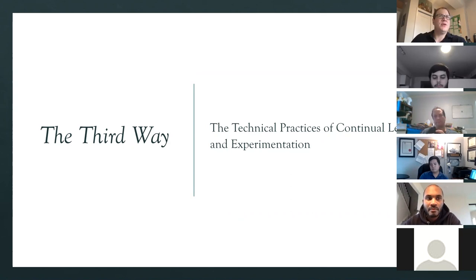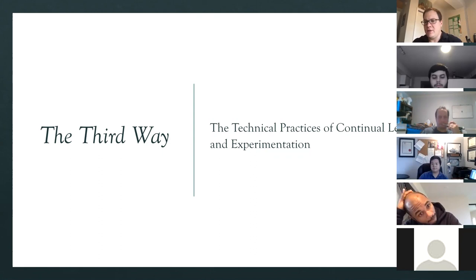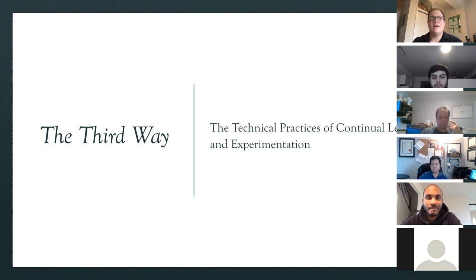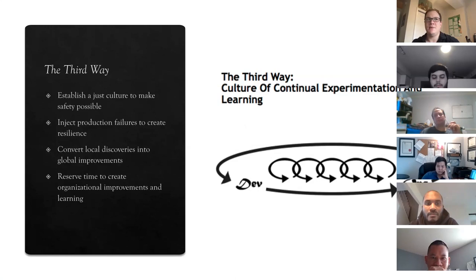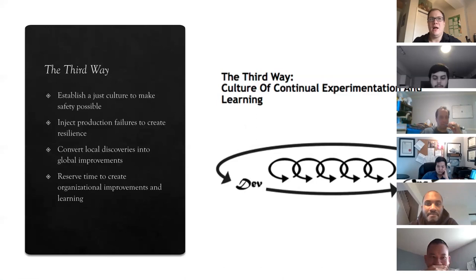The high-level principles of the third way that we'll be discussing today and on Friday: we want to establish a just culture to make safety possible; we want to inject production failures into our process to create resilience; we want to convert local discoveries into global improvements; and we want to reserve time to create organizational improvements and learning. Injecting learning into daily work can be difficult — there are a lot of different components to it.